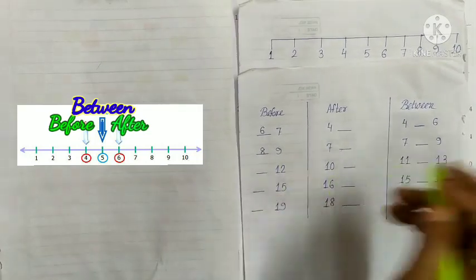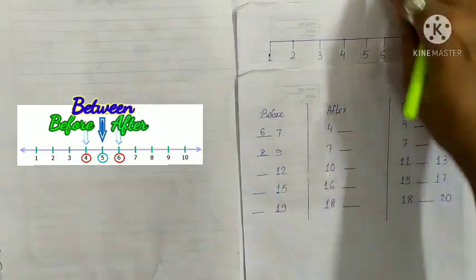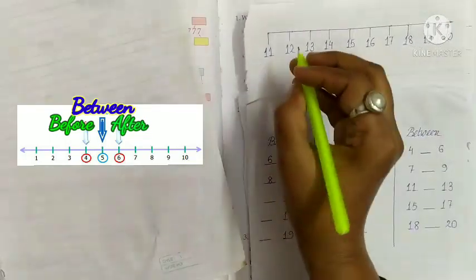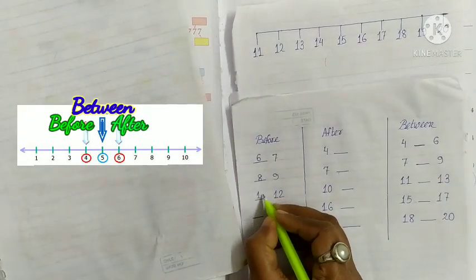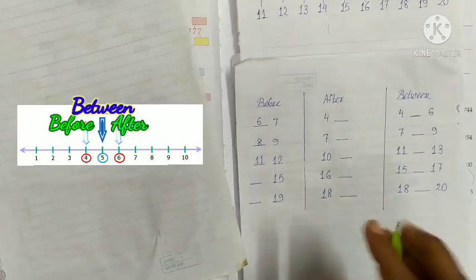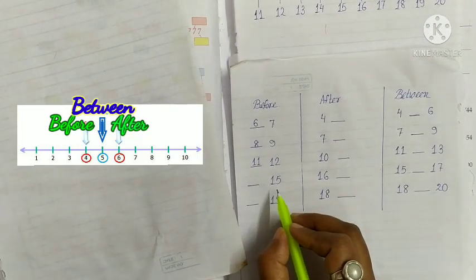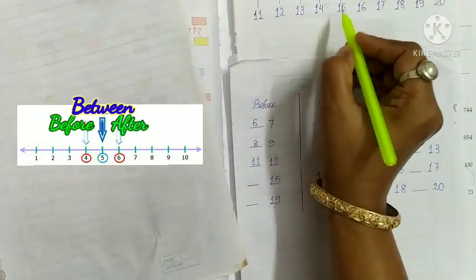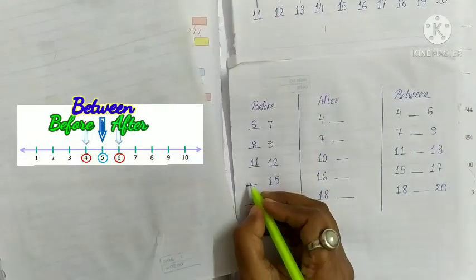Next, 12. What comes before 12? 11, 12. Before 12 is 11. Write 11. Next, 15. What comes before 15? 11, 12, 13, 14, 15. Before 15 is 14. Write 14.